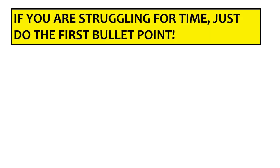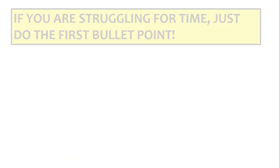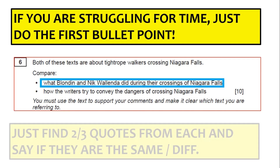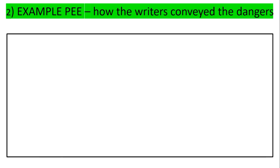Remember: if you are struggling with time, just worry about the first bullet point — what they did. If you haven't got time for the second bullet point, just do five or six of these PEEs on what they did instead.